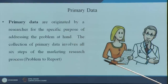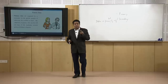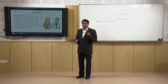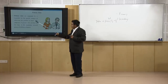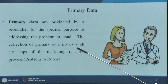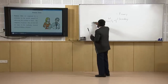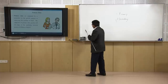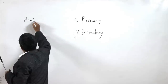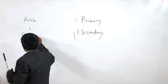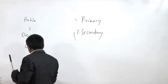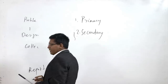Without the problem definition, or without addressing the problem properly, a researcher cannot ever conduct research properly. The collection of primary data involves all six steps of the marketing research process — starting with the problem definition, then the design, collection, analysis, and finally the report writing.